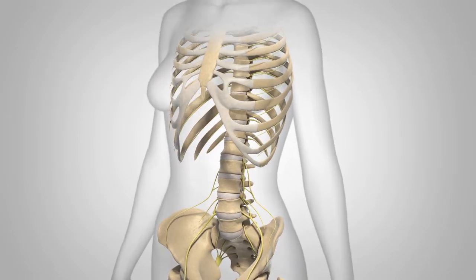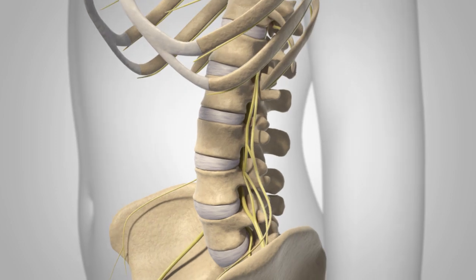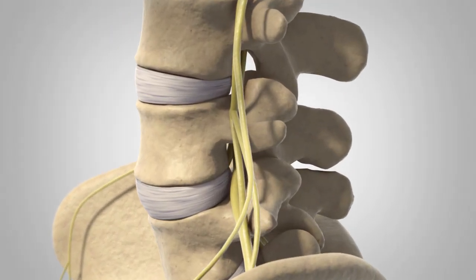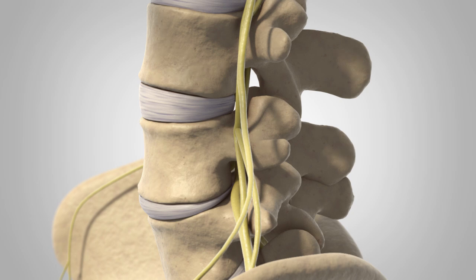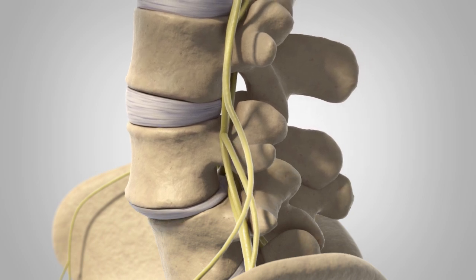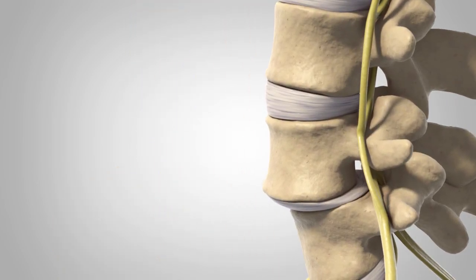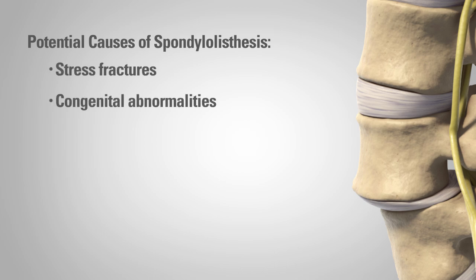Advanced degenerative disc disease that results in spondylolisthesis is a condition where the disc degenerates, resulting in a loss of disc height, causing instability and one vertebra to slip forward over another one below it. Other causes of spondylolisthesis include stress fractures or congenital abnormalities, and in rare cases a tumor or trauma.